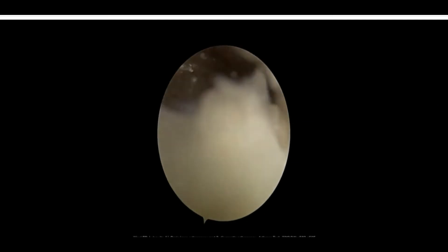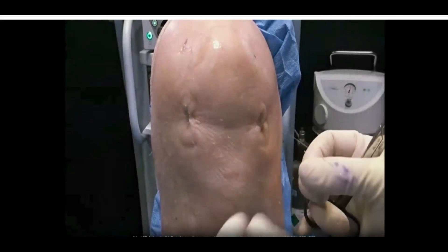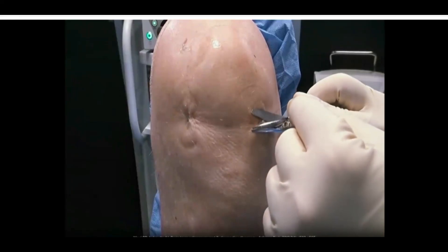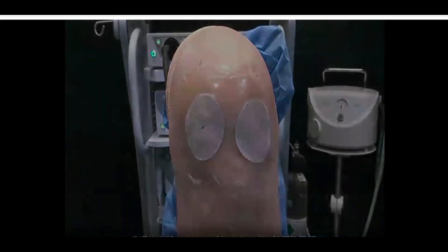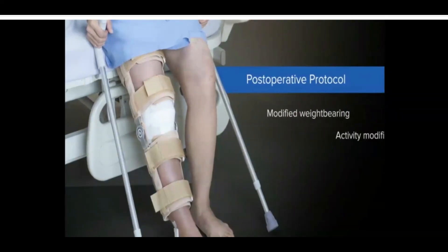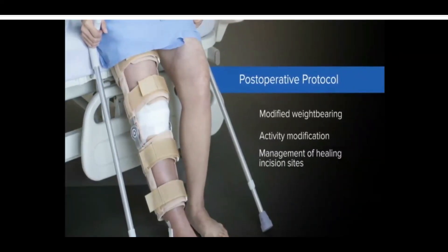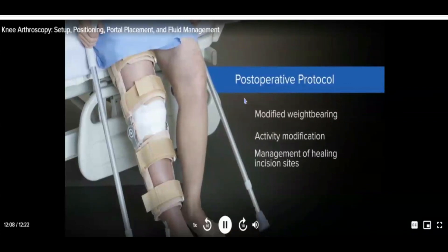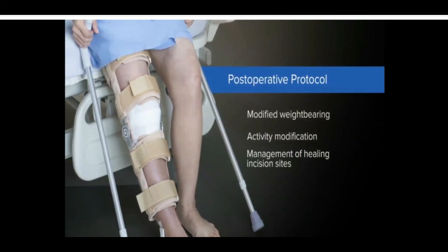At the completion of the procedure, remove the arthroscope and aspirate the remaining saline prior to skin closure. Depending on the incision size, the arthroscopic portal may be closed with a suture, small adhesive strips, or simply covered with small bandages and a compressive dressing. Post-operative care typically involves modified weight-bearing and activity modification for a short period of time, as well as management of the healing incision sites. Further restriction may be instituted if repair, reconstruction, or cartilage surgery is performed during arthroscopy.